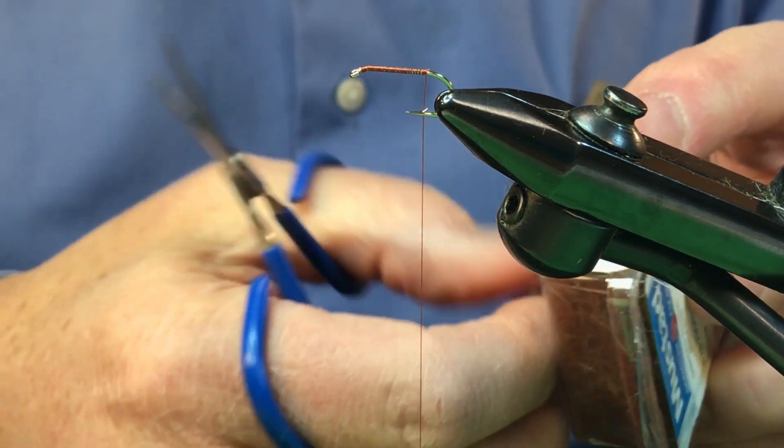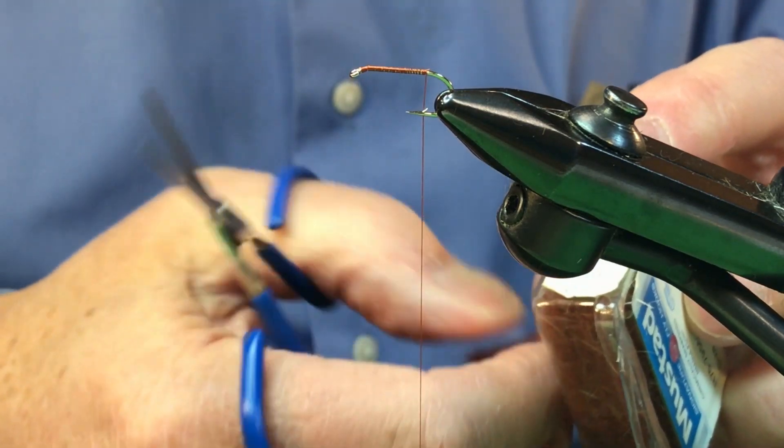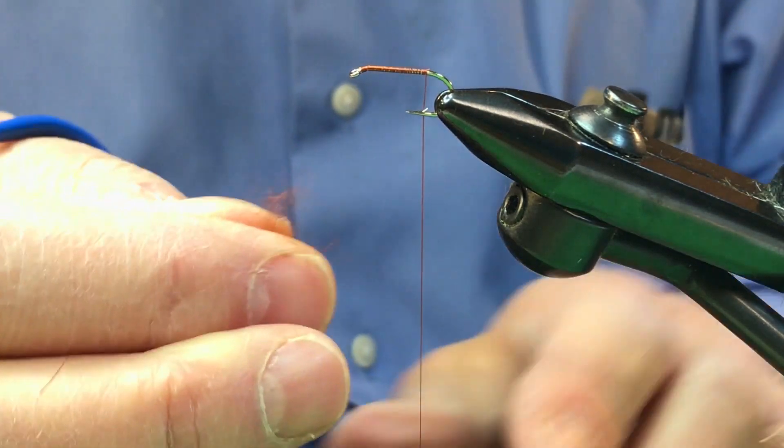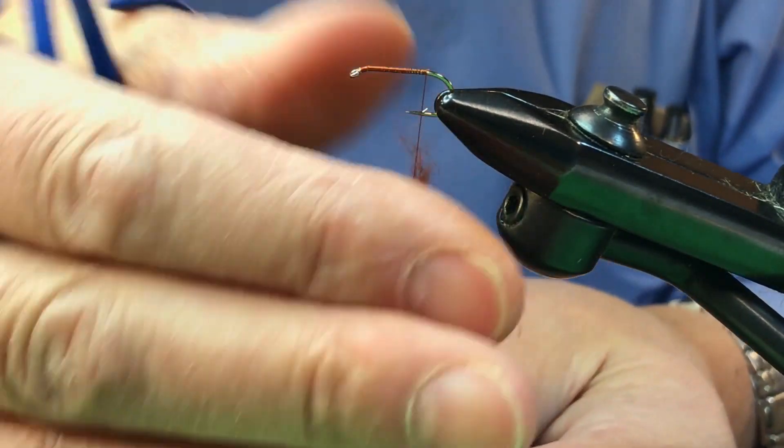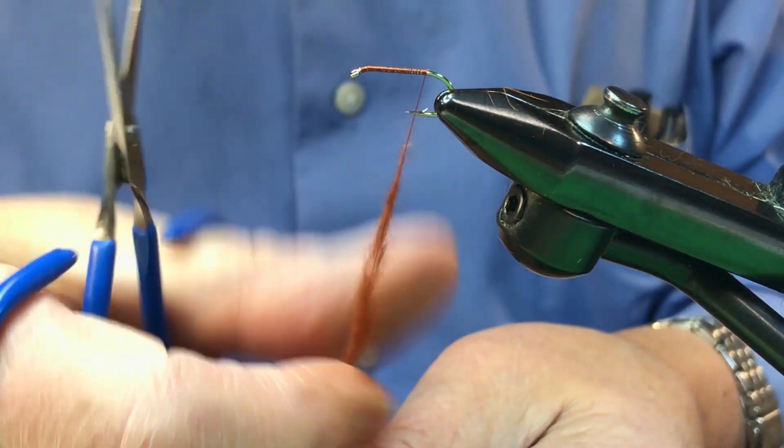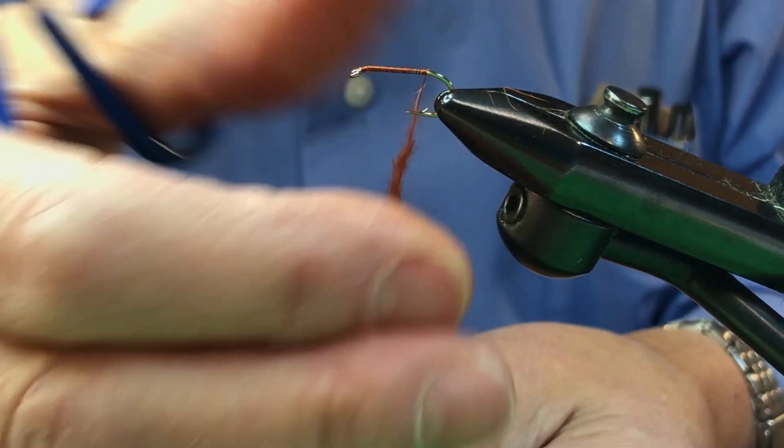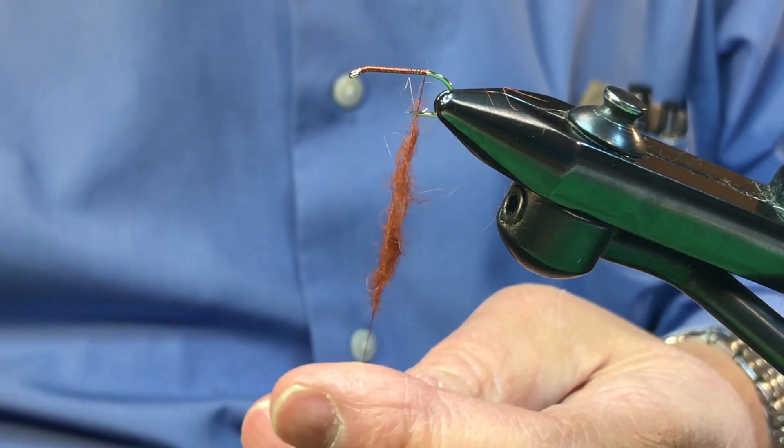So to put the dubbing on, you'll add maybe twice what you would normally use. We just put on a pretty good bunch of dubbing there like this and just put it on loosely. So we're talking about a loop. Well, where's the loop? I'm going to make it right now.